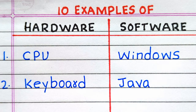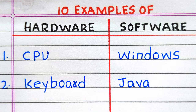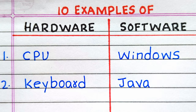First example of hardware is CPU, Central Processing Unit. Second is keyboard. First example of software is Windows. Second is Java.